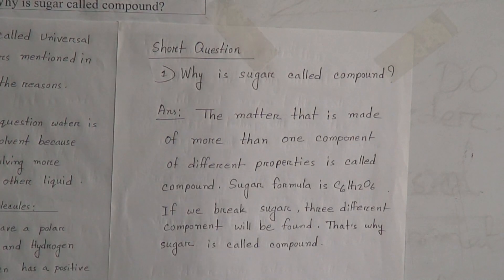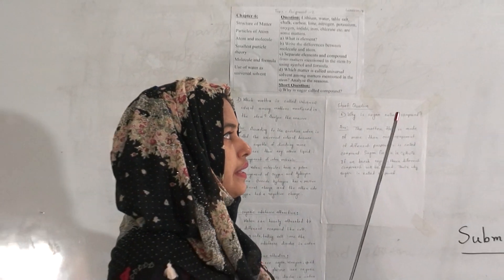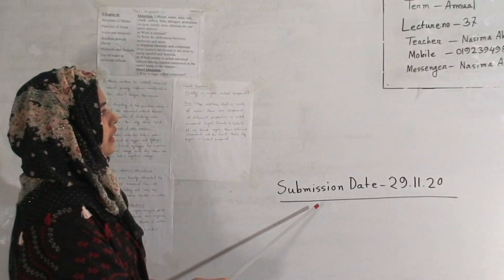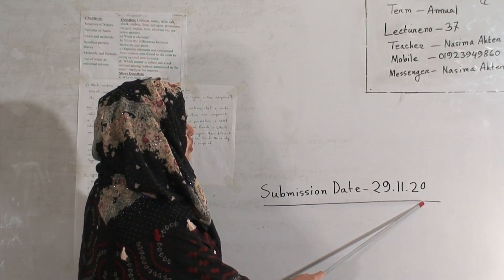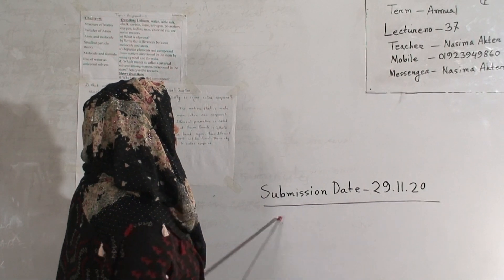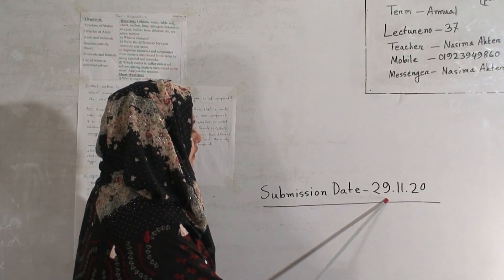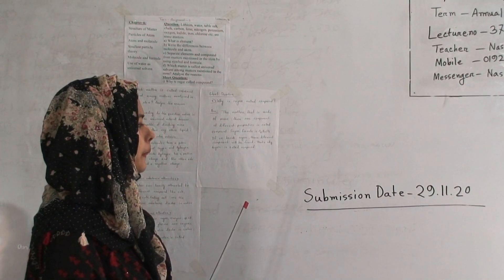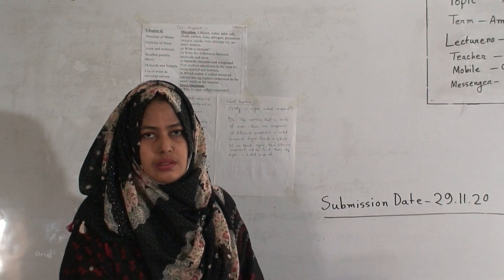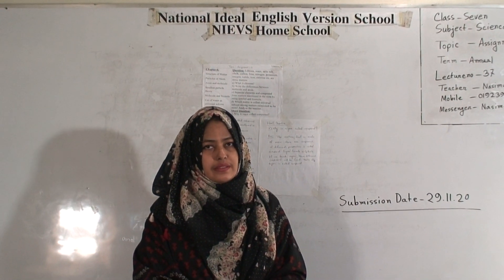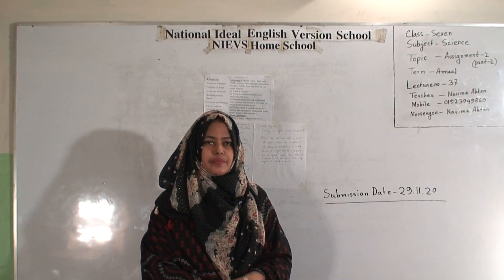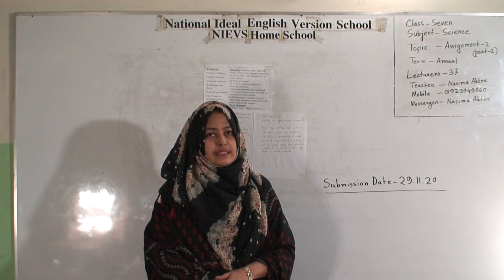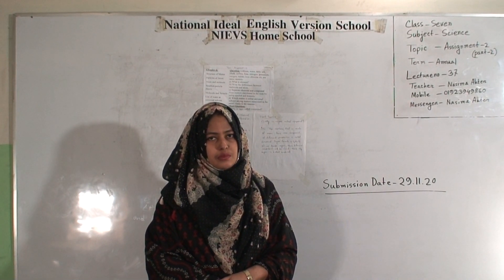Dear students, I hope you have understood. Your Science Assignment 2 submission date is 29-11-20. I hope you will do your assignment properly and submit it by the due date, that means 29-11-20. So dear students, stay home and we will see you again in our next class. Till then, Assalamualaikum. Thank you.